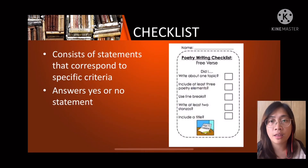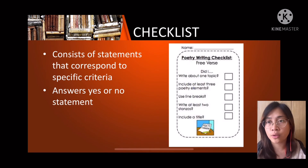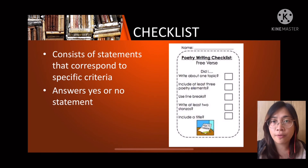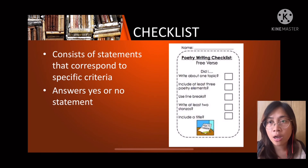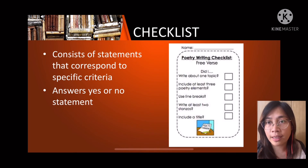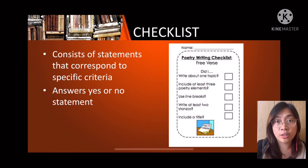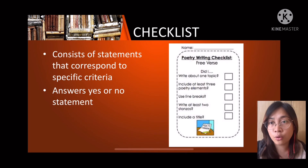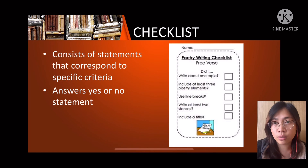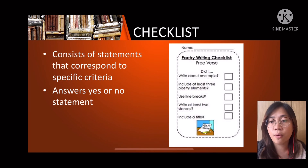A checklist consists of statements that correspond to specific criteria and normally answers yes or no questions. An example is a poetry writing checklist for free verse: Did the student write about one topic? Did he include at least three poetry elements? Did he use line breaks? Was he able to write at least two stanzas? We simply check whether the student was able to do each item or not.